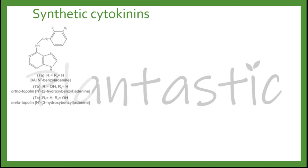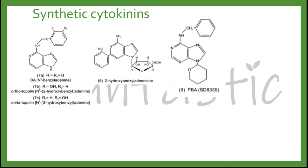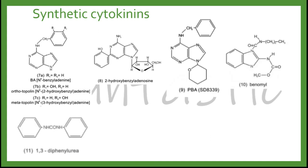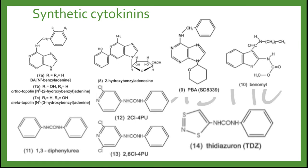Here are the synthetic cytokinins, which are BA or BAP, orthotopoline or metatopoline, 2-hydroxybenzyl-adenosine, PBA, benomyl, 1,3-diphenylurea, 2-Cl4-PU, 2,6-Cl4-PU, and 3-D-zerozoron TDZ. The most common synthetic cytokinins found in most papers are BAP and TDZ. The rest of the synthetic cytokinins are not commonly used in research or optimization of growth.